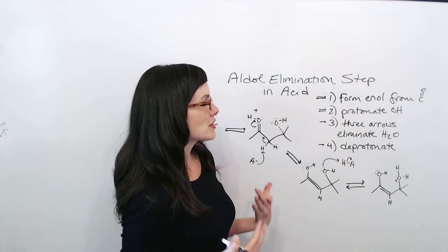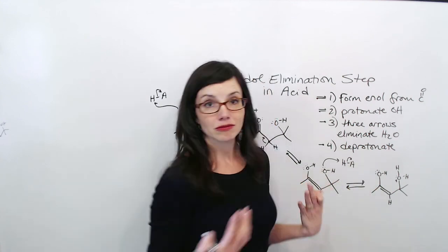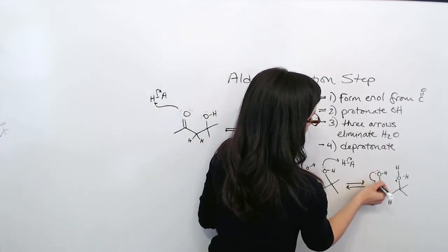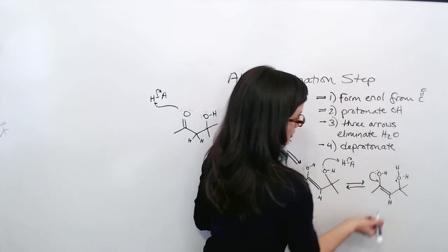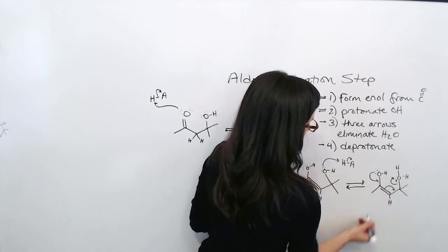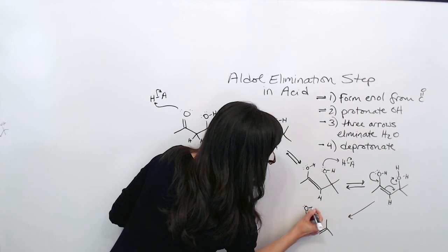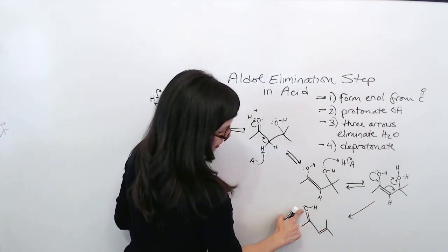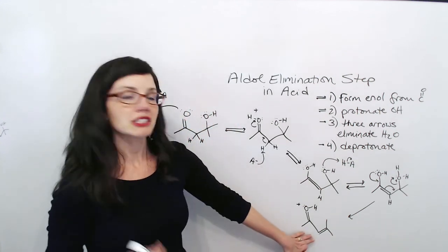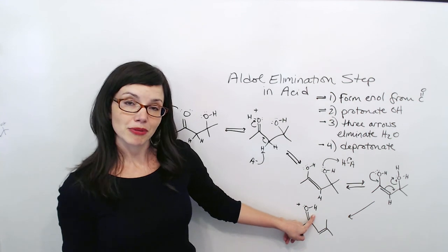Next, we're going to use three arrows to eliminate water. They're going to start here at what used to be our carbonyl oxygen. We're going to push our electrons down to reform the carbonyl. These electrons are going to move over, and then we're going to kick off water. We've now reformed our carbonyl oxygen, but it's still protonated. And we're starting to look close to our final products. All that's left is that we need to deprotonate our O.